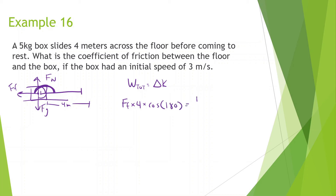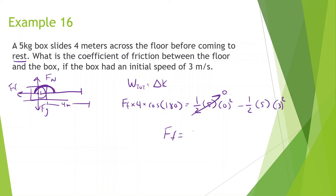Change in kinetic energy is one-half m v-final squared minus one-half m v-initial squared. Final velocity is zero since it comes to rest, and initial speed is 3 meters per second. So negative friction force times 4 equals negative one-half times 5 times 9, giving force of friction equals 5.625 newtons. Since friction force equals mu times normal force (5 times 10 equals 50), mu equals 5.625 divided by 50, which is 0.11.